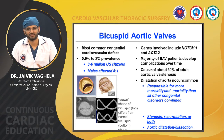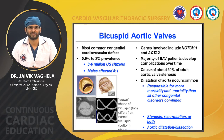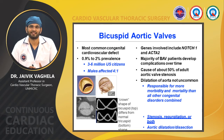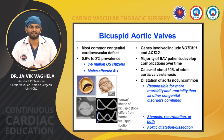The most common congenital anomaly is bicuspid aortic valve, with a prevalence of 0.9 to 2%, affecting 3 to 6 million U.S. citizens. Males are affected more than females at a 4:1 ratio. It is a genetic disease involving the NOTCH1 and ACTA2 genes. Bicuspid aortic valve is associated with more complications over time: in 50% of adult cases it is associated with aortic valve stenosis. It is responsible for more morbidity and mortality than all other congenital disorders combined, and can present as stenosis, regurgitation, or both, with possible aortic root dilatation and dissection.